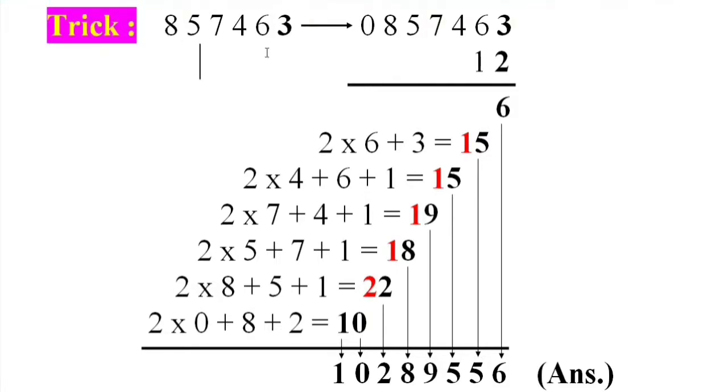Trick: Write down 10 besides original number. This is original number into 12. 3 into 2 equal 6. 2 into 6 plus 3 equal 15. 2 into 4 plus 6 plus carry 1 equal 15.